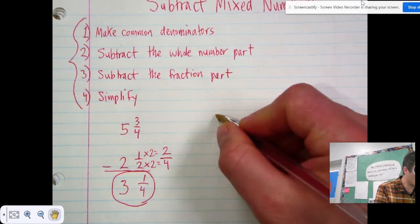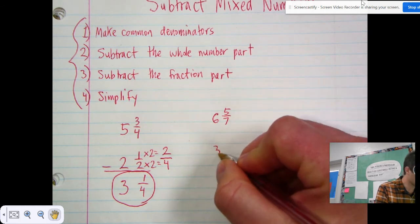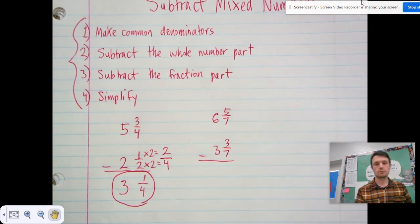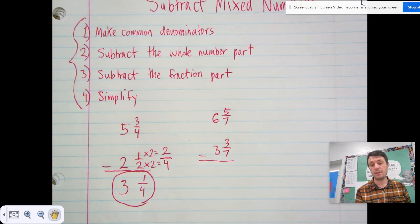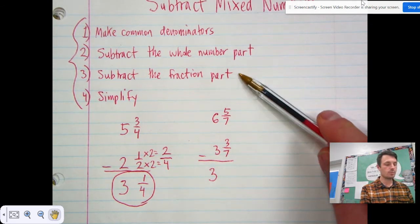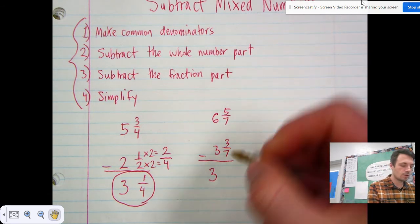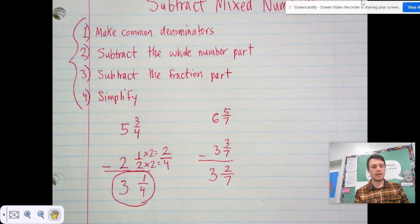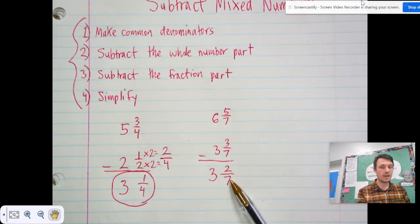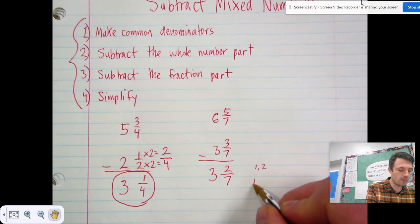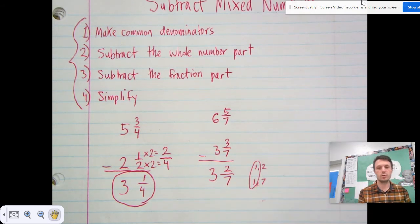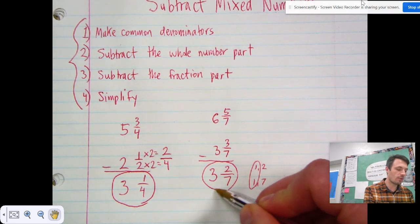Let's do another example. Six and five-sevenths minus three and three-sevenths. Step one: make common denominators — we can skip that step because they're already like fractions; five-sevenths and three-sevenths both have seven as their denominator. Step two: subtract the whole number part — six minus three is three. Step three: subtract the fraction part — five-sevenths minus three-sevenths is two-sevenths. Step four: simplify. The factors of two are one and two; the factors of seven are one and seven; the GCF is one, so two-sevenths is already in simplest form. Three and two-sevenths is your final answer.